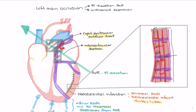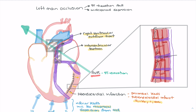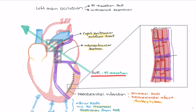So a couple of things are happening. First, when an occlusion forms in the left main coronary artery, particular areas are sensitive to it — the right ventricular outflow tract and the intraventricular septum — prone to ischemia and necrosis. Because AVR looks specifically at that portion of the heart, I see ST elevation. The reciprocal leads to AVR are 2, 3, and AVF, so I should see reciprocal ST depression in the inferior leads.